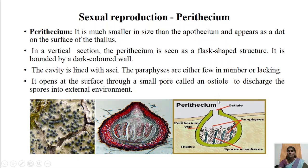When the ascospores are released, they germinate to produce hyphae. Hyphae when they come in contact with algal cells develop into new lichen thalli. This is about sexual reproduction in ascolichens, where fertilization results in the formation of two fruiting bodies: apothecium, a cup-shaped structure, and perithecium, a flask-shaped structure, both ultimately producing eight ascospores.